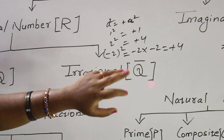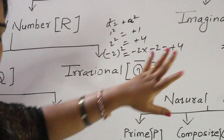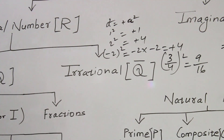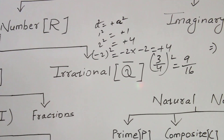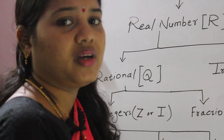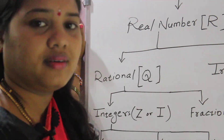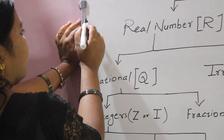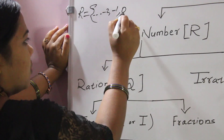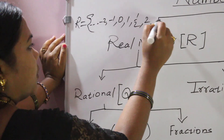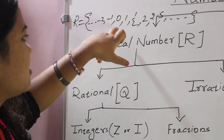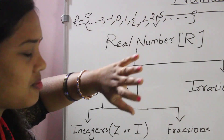For example: 1² = 1, 2² = +4, (-2)² = +4, and (3/4)² = 9/16. So any number whose square is a positive number is a real number. The real number set contains negative numbers, zero, positive numbers, decimals, and fractions. We can write R = {... -2, -1, 0, +1, 1/2, 2, 2.5, ...}.